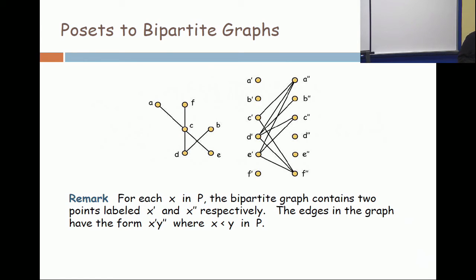Two sentences. For each x in P, there's both an x prime and an x double prime in the bipartite graph. And the edges all have the form x prime, y double prime, where x is less than y in P. You're supposed to put back to me that sentence.